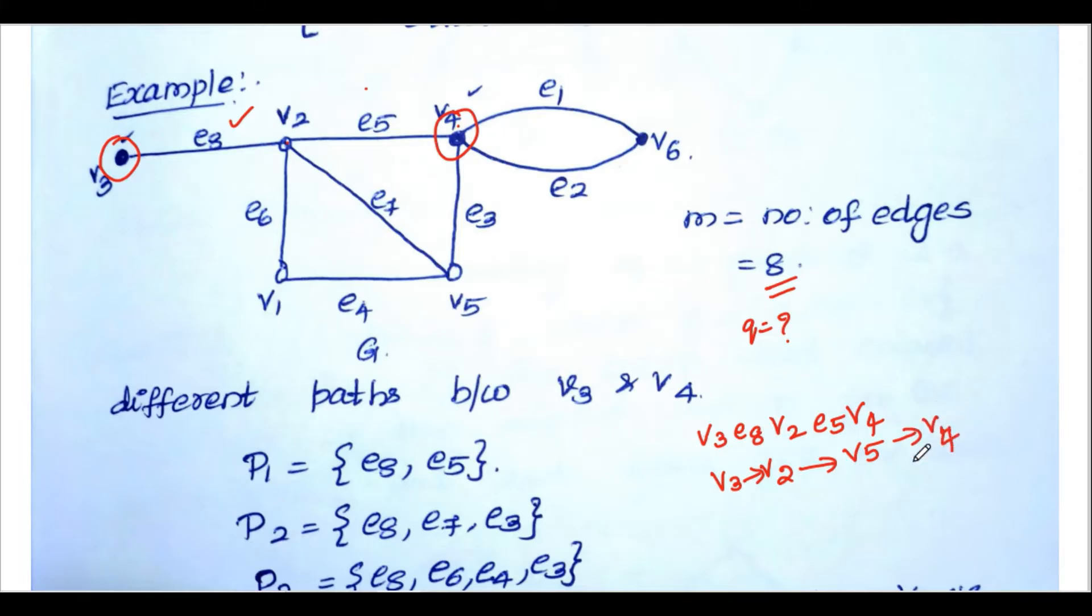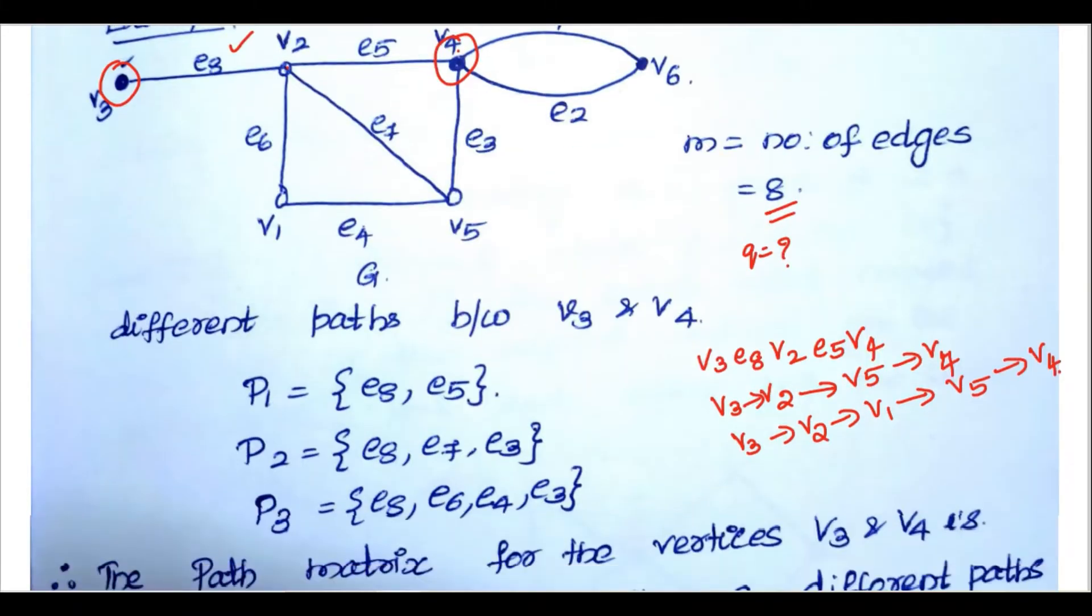This is one of the paths. Then v3 to v2, v2 to v1, v1 to v5, v5 to v4 is another path. So p1, p2, p3 in notation. First path contains two edges, second path contains three edges, and the third path contains four edges. The path matrix between v3 and v4, we have three paths.